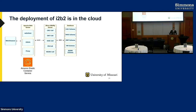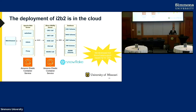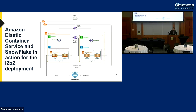Our i2b2 setup uses one Docker container for the web server and one for JBoss. On the back end it's Snowflake — before Snowflake we had AWS Database Migration Service with a PostgreSQL server. For the Snowflake deployment we developed Snowflake support and deposited the source code in the i2b2 repository as a Snowflake branch. There's the Elastic Container Service with auto-scaling deployment using AWS Fargate and connectivity to Snowflake.